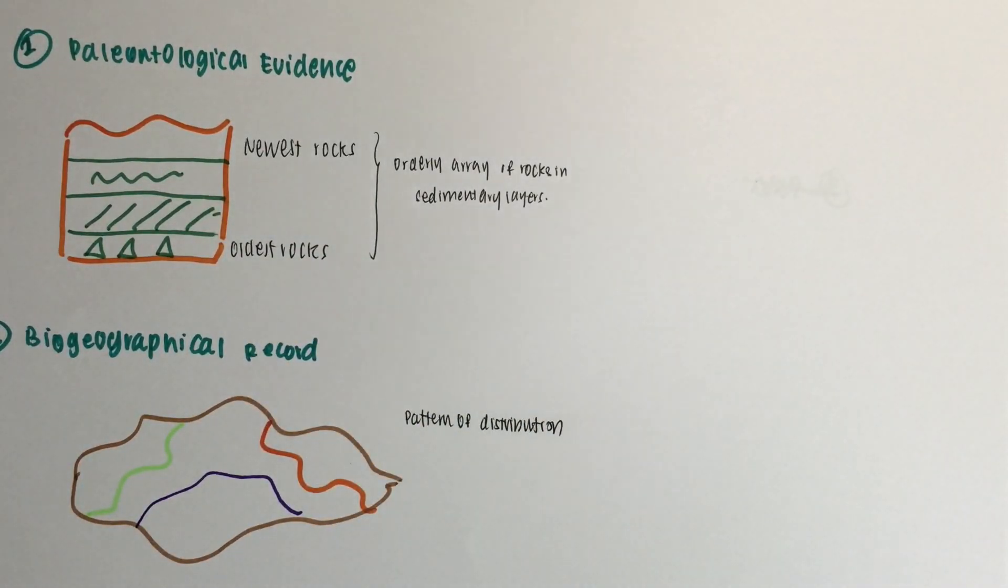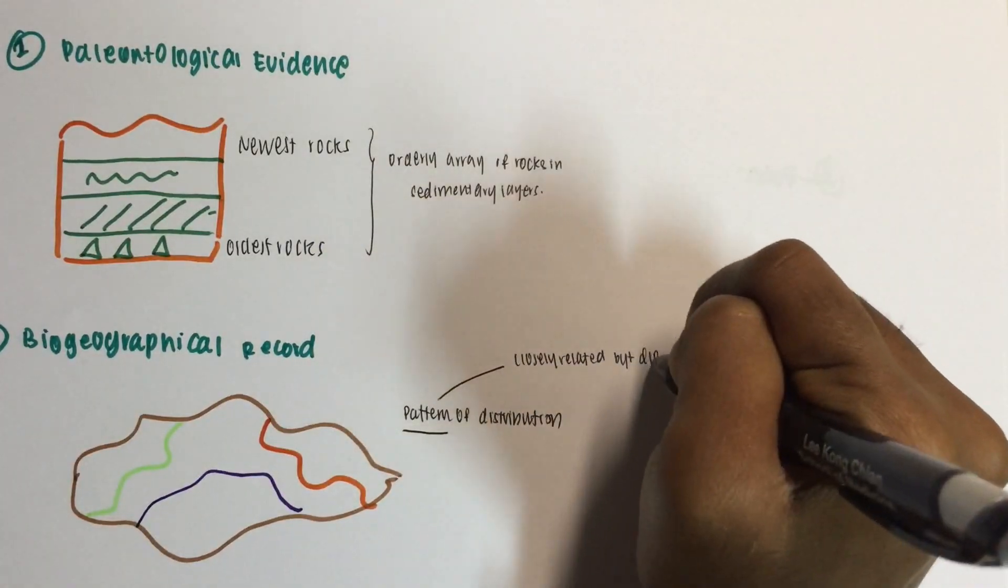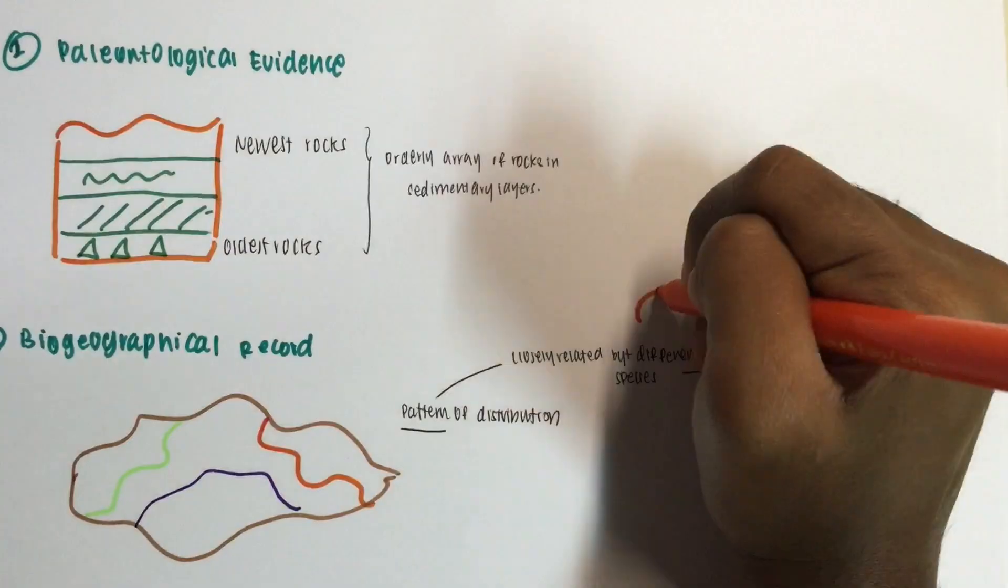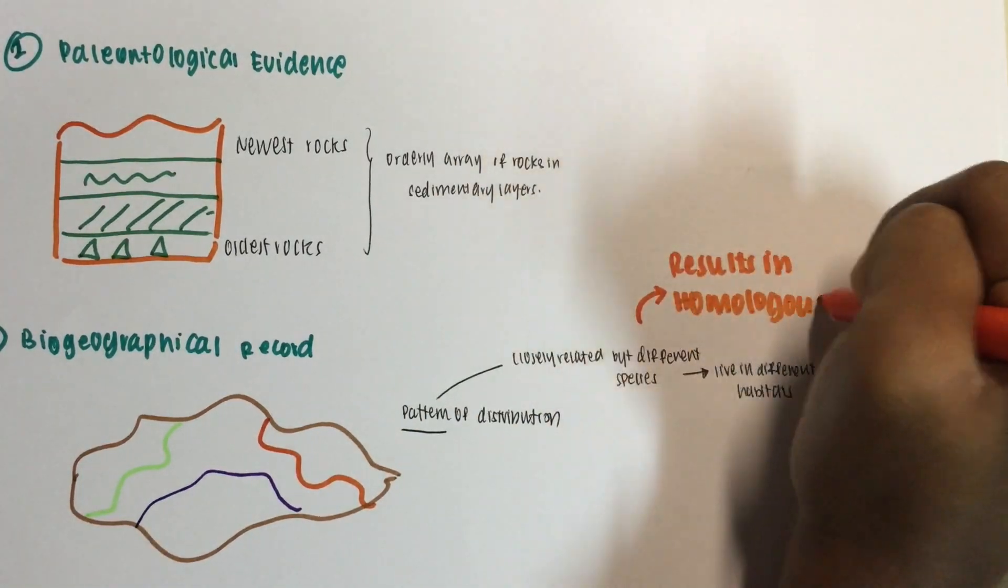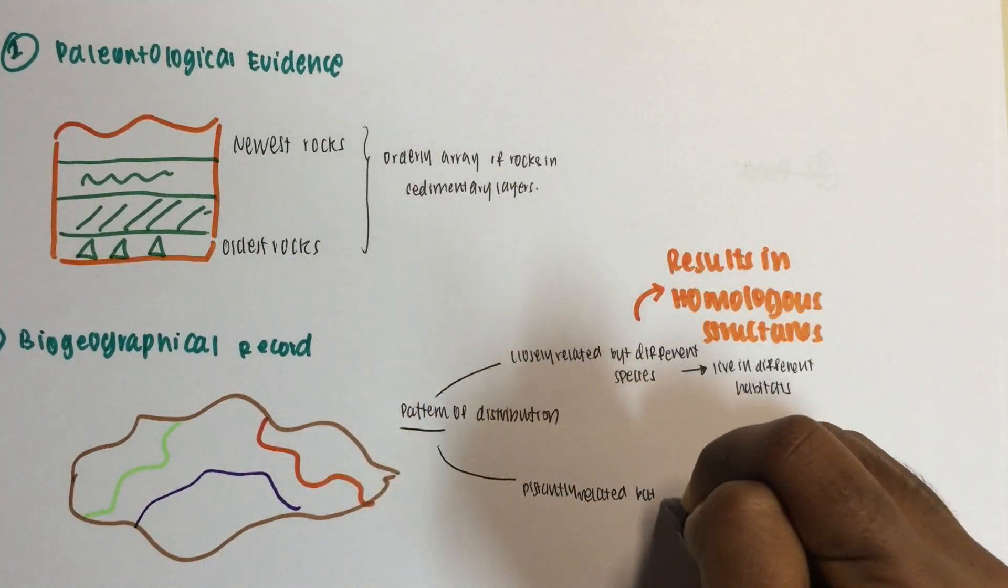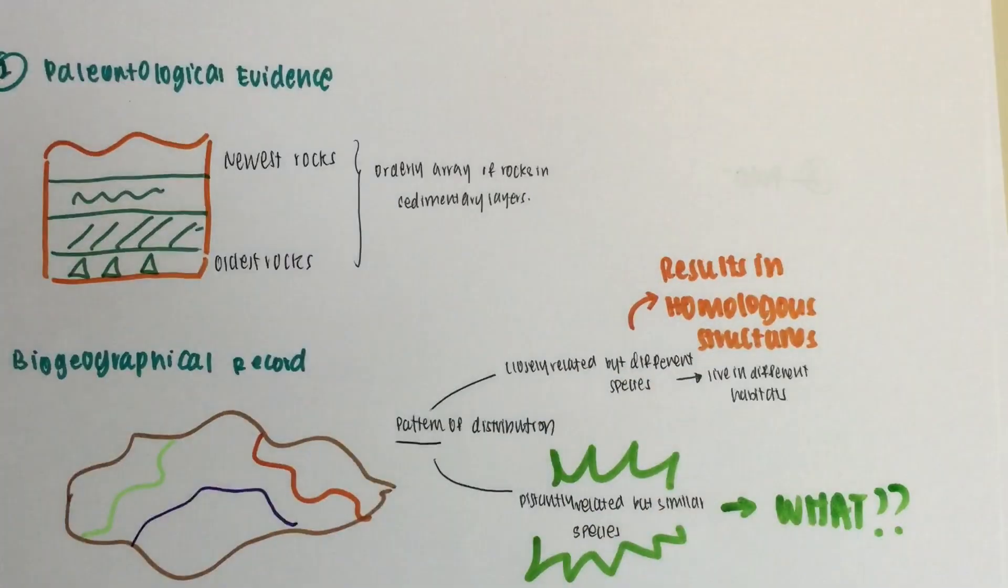Firstly, when closely related but different species live in slightly different habitats, we know that as homology. But when distantly related but similar species live in similar habitats around the world, what exactly is that? We don't know yet.